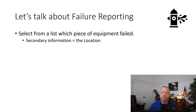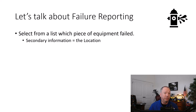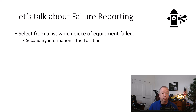Let's begin with failure reporting. It's very important to focus the failure report down to the specific piece of equipment that experienced the failure. While it seems obvious, you need to provide your team with a clear list of the equipment that you wish these kinds of reports to be made against. Don't leave them guessing. Equipment tag numbers, barcodes, QR codes, and other methods of identification are immensely helpful.